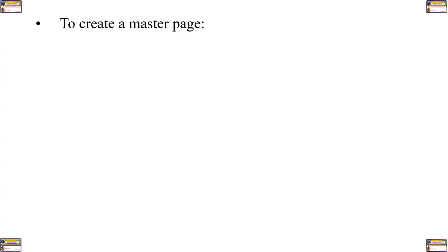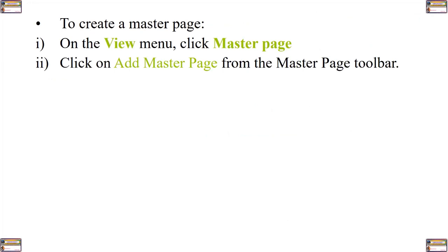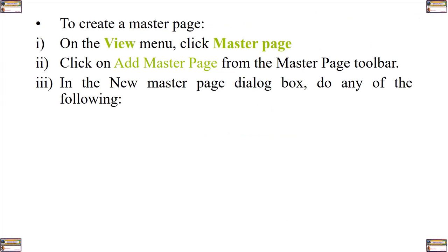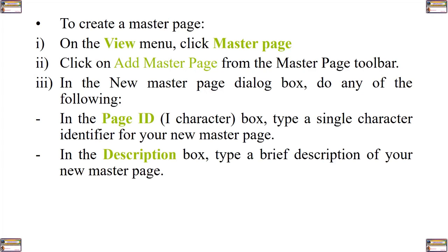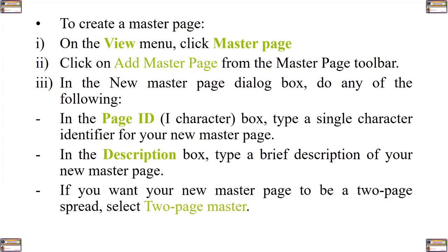One advantage of using master pages for the common elements is that it gives your publication a more consistent appearance. You can also create and update these elements in one place instead of changing them on each page where the design elements appear. To create a master page, go to the View menu and click on master page, then click on Add Master Page from the master page toolbar. In the New Master Page dialogue box, type a single character identifier for your new master page, type a brief description, select two-page master if needed, and click OK.